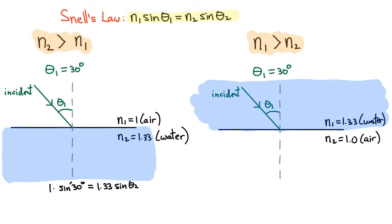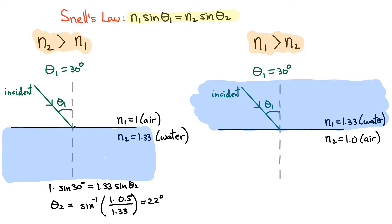We can solve this. Sine of 30 is approximately one half, so theta 2 equals arc sine of one half divided by 1.33. Substituting that into your calculator, you should get approximately 22 degrees. So if theta 1 is 30, this angle ends up being smaller — theta 2 is 22 degrees. When you go from a low index to a high index, the refracted angle is always smaller than the incident angle.